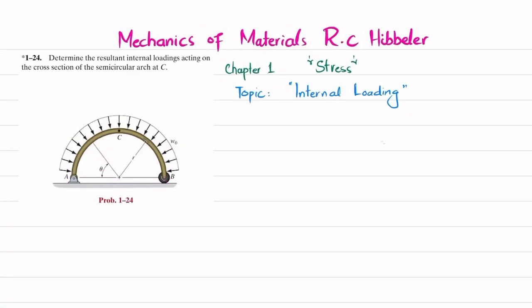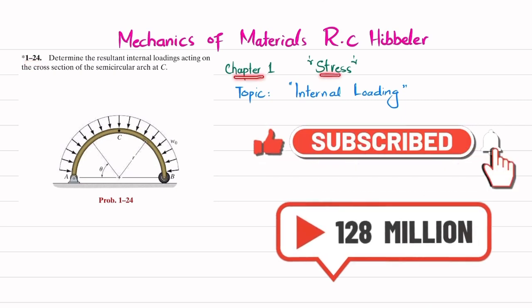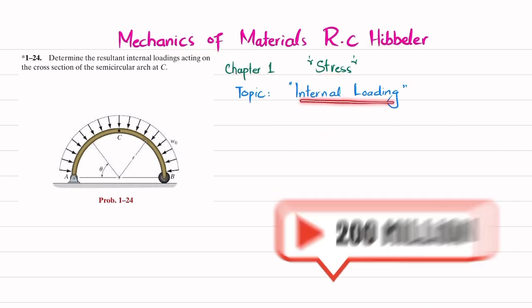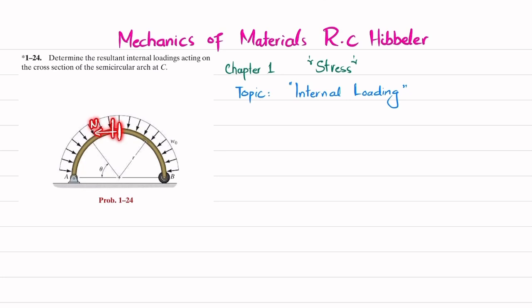Welcome back. In this video we are going to solve problem 1-24 taken from chapter 1 (Stress) from the book Mechanics of Materials by R.C. Hibbeler. The topic is internal loading. This is a complex problem. The statement is: determine the resultant internal loading acting on the cross-section of the semicircular arc at C. So we have to find the normal force, the shear force, and the moment.